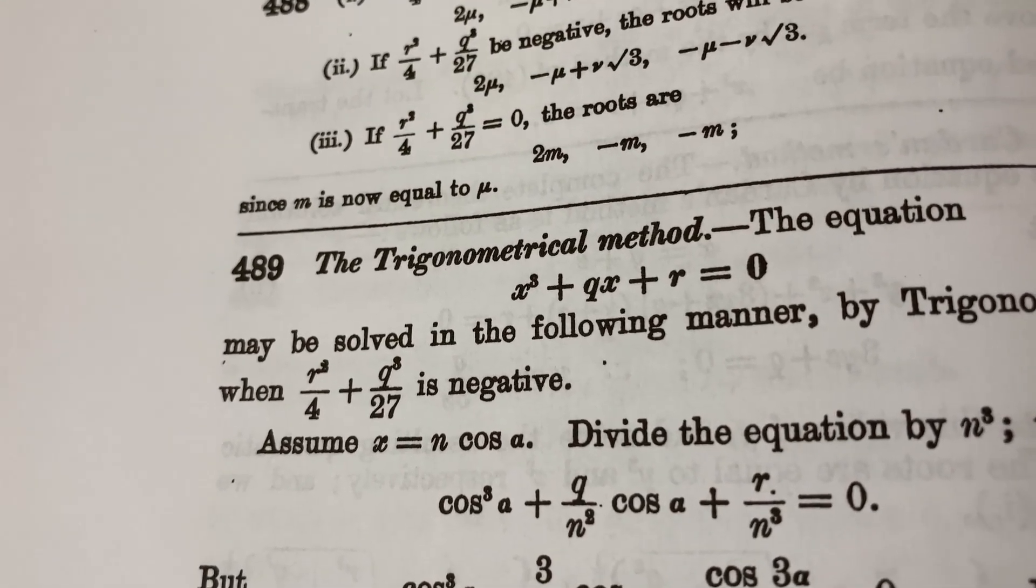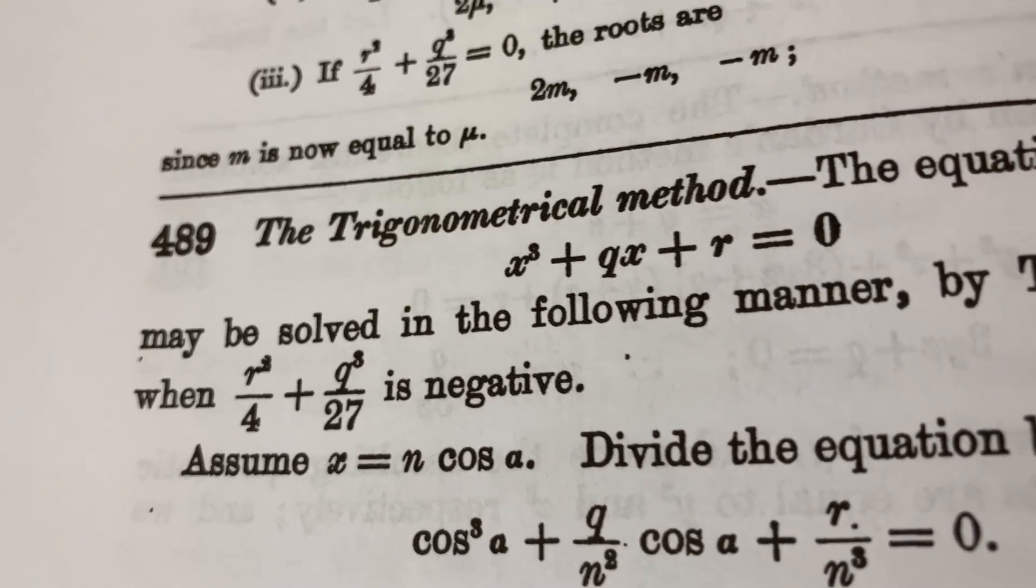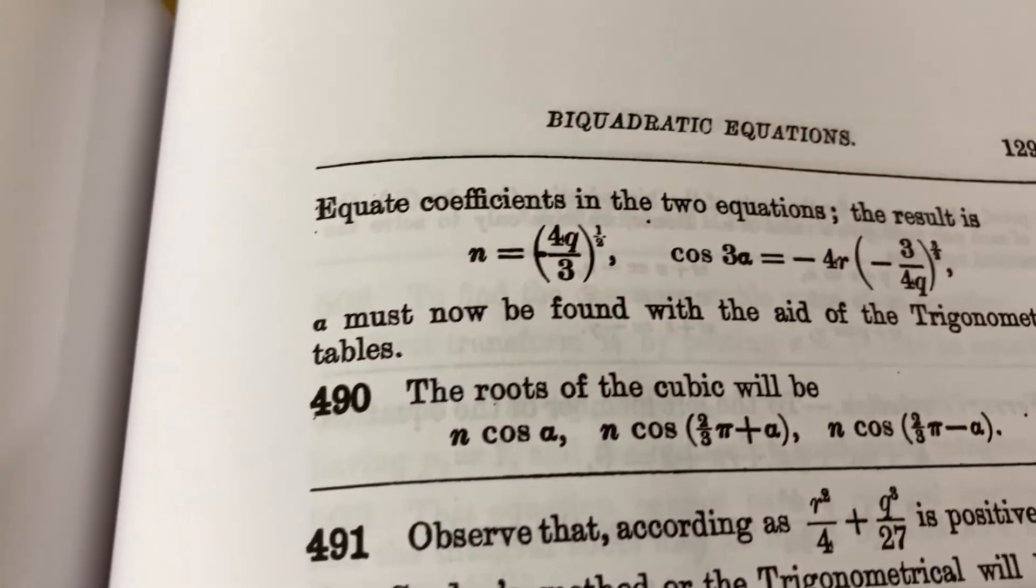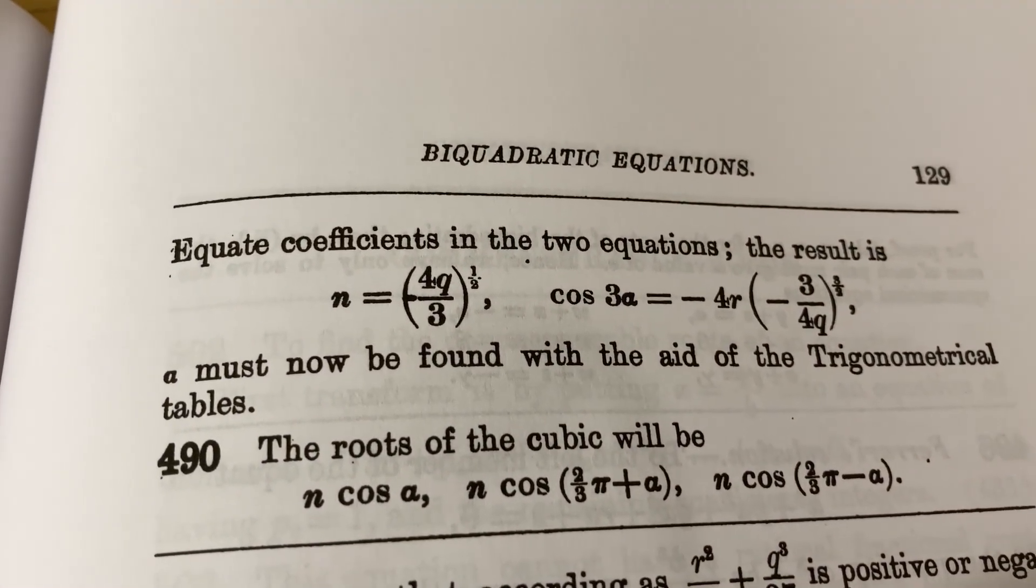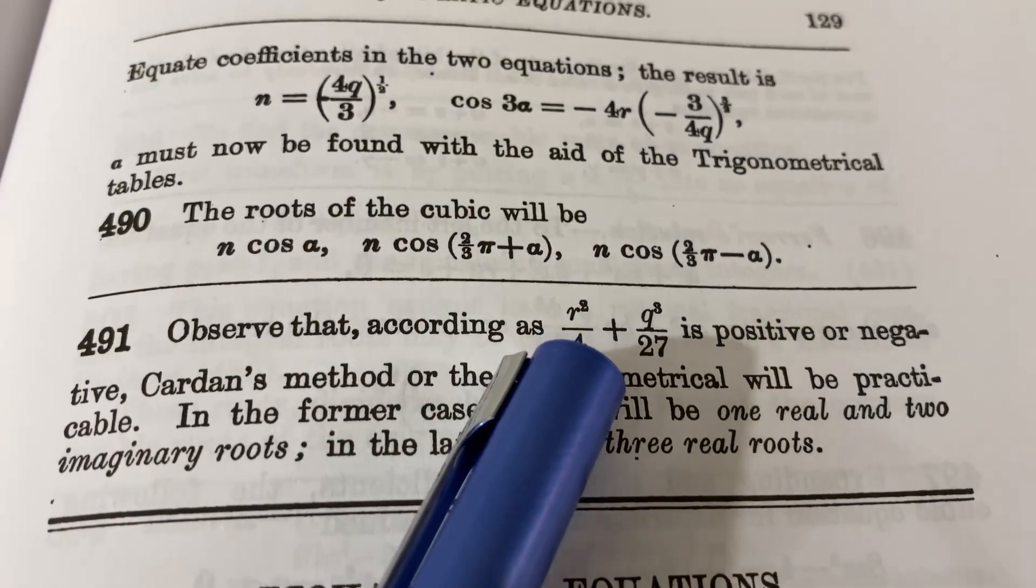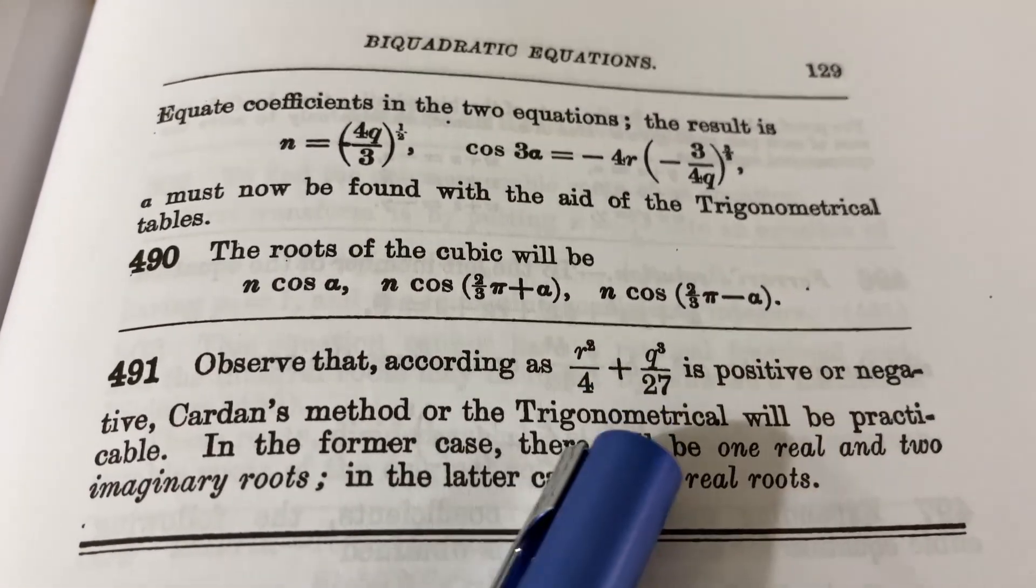And then he actually gives another method called the trigonometrical method to solve the cubic equation. And in this case, it can only be solved when this expression here is negative. And he actually goes through and shows some of the steps and then finishes up here. Really cool to see this type of math in an old book like this. And so depending on whether this quantity is positive or negative, you would use Cardin's method or the trigonometrical method.